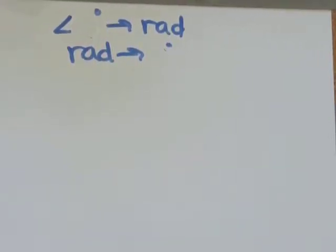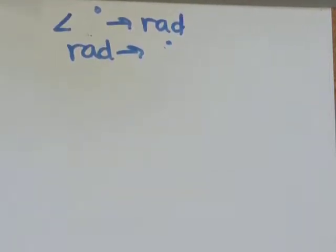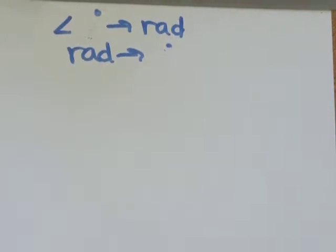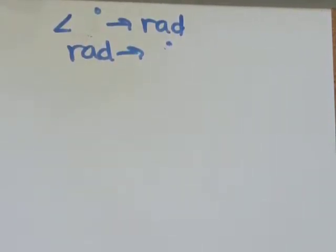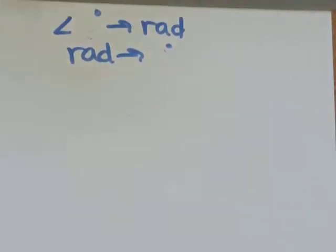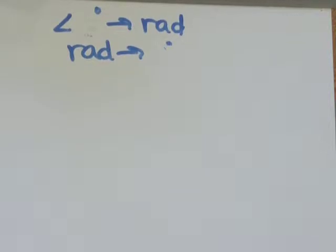Hey everyone, in this video we're going to talk about how to convert a measure of an angle in degrees into radians, and how to do the opposite—how to take an angle measured in radians and convert it into degrees. Degrees and radians both just measure angles. It's kind of like degrees Celsius and degrees Fahrenheit. They both measure temperature, but they're just a different way of expressing it.